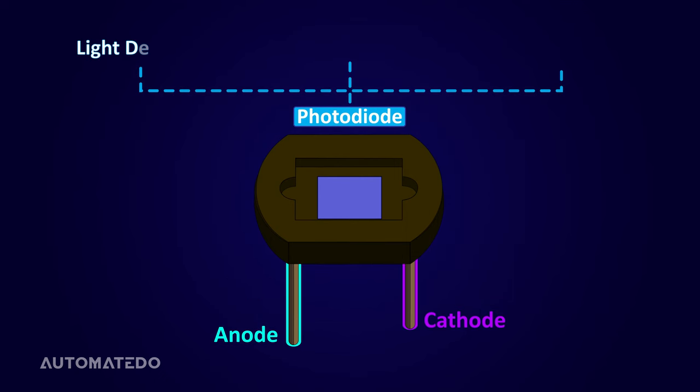The cathode terminal is the diode's shorter end whereas the anode terminal is the diode's longer end. It is worth mentioning that the terms light detector, photo detector, or photosensor are also used occasionally instead of photodiode.